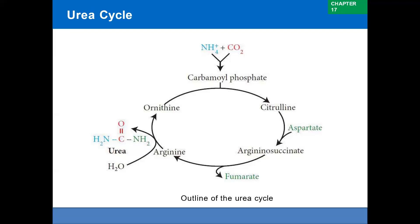Step four: cleavage of argininosuccinate. Argininosuccinate is split to produce arginine and fumarate. Fumarate acts as a connecting link between the urea cycle on one side and the TCA cycle and gluconeogenesis on the other.